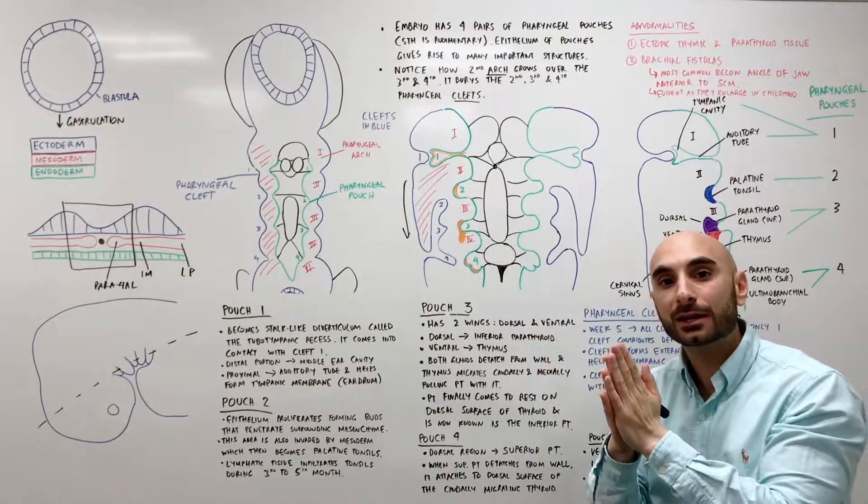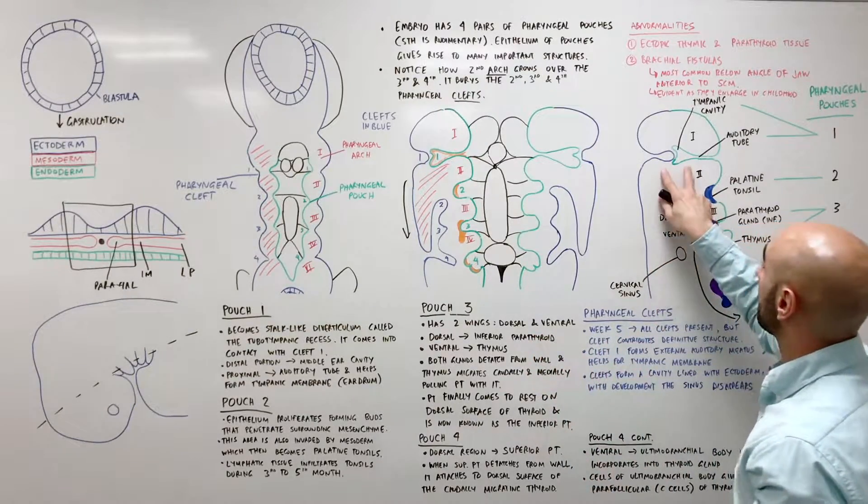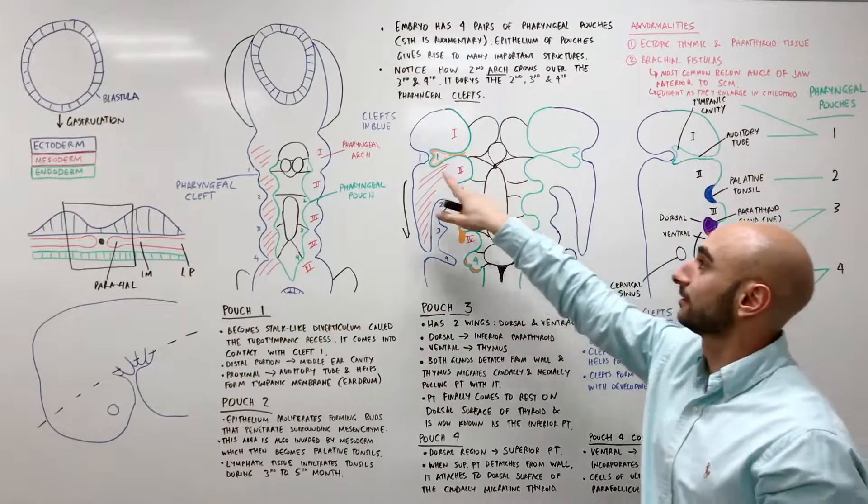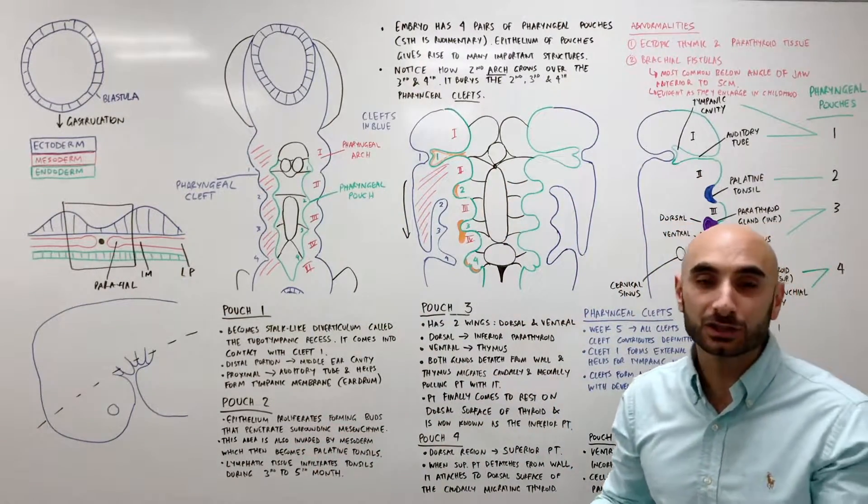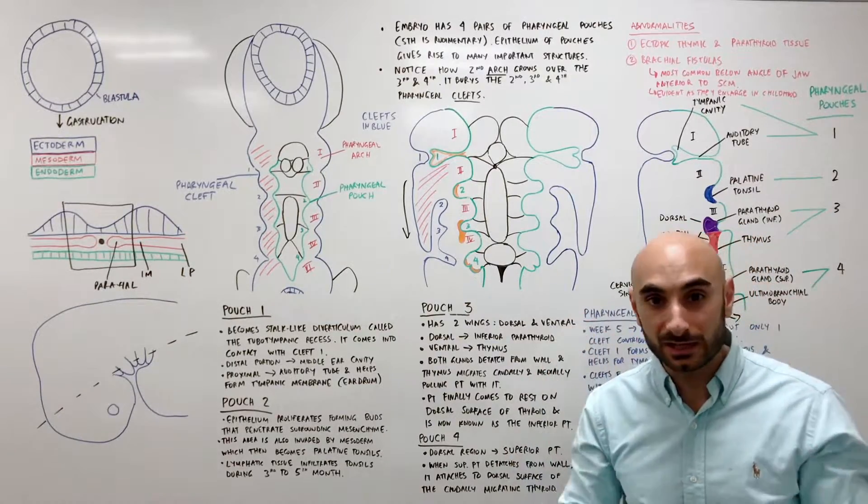And the good way to remember that is, literally, that's your ear. The best way to remember it is to think about it as the 1st pharyngeal pouch and 1st pharyngeal cleft as the tubes of the ear.